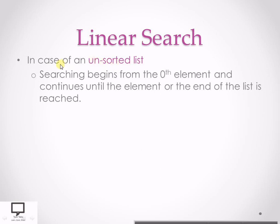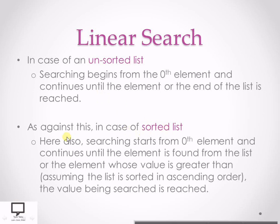For an unsorted list, searching begins from the zeroth element and continues until the element is found or the end of the list is reached. For a sorted list, we also start from the zeroth element but check two conditions: continue searching one by one until the element is found, or until an element whose value is greater than the key value is reached. If either condition is true, the search is declared successful or unsuccessful accordingly. We will assume the sorted list is in ascending order.